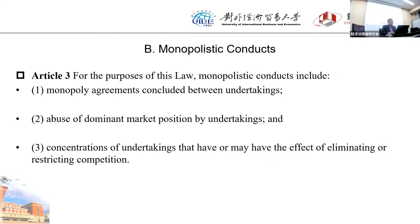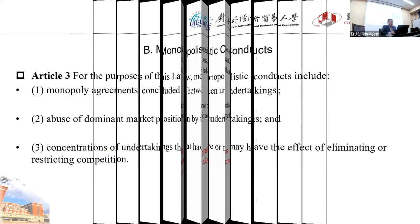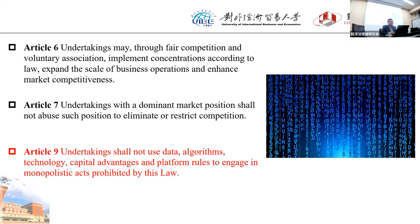In China, similar to other jurisdictions, we have regulations covering monopoly agreements, abuse of dominance, and concentration of undertakings. Also, a new element incorporated into the new law concerns data and algorithm. Article 9 stipulates that undertakings shall not use data, algorithm, technology, capital advantages, and platform rules to engage in monopolistic acts prohibited by this law. This is a general policy statement in Chapter 1 signaling attention to this area.